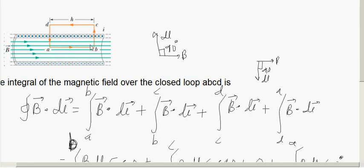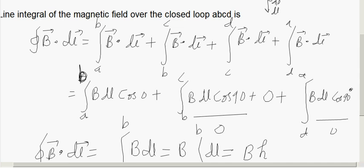Along AB, you got it as B into dL cos 0 because B and dL are in the same direction. The angle between B and dL is 0, whereas along BC, that is when you go like this, you got it as angle between B and dL as 90 degrees. So cos 90 is 0.